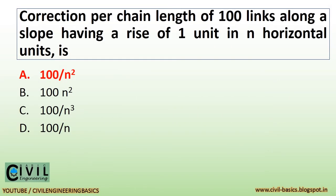Correction per chain length of 100 links along a slope having a rise of 1 unit in n horizontal units is 100 divided by n squared.